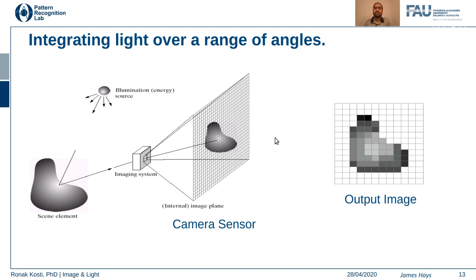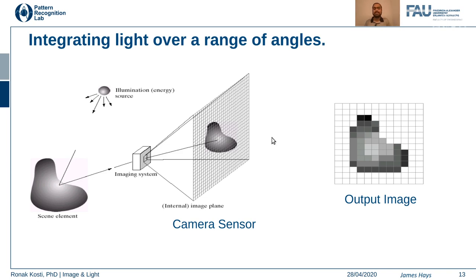If you move the imaging system around an object, you are able to capture the scene element with different variations in intensity and reflectance, because if the object is not uniform and the sources vary, you will capture different matrix values depending on where your imaging system is positioned. Light is ultimately captured and stored by cameras as a matrix of intensity values.